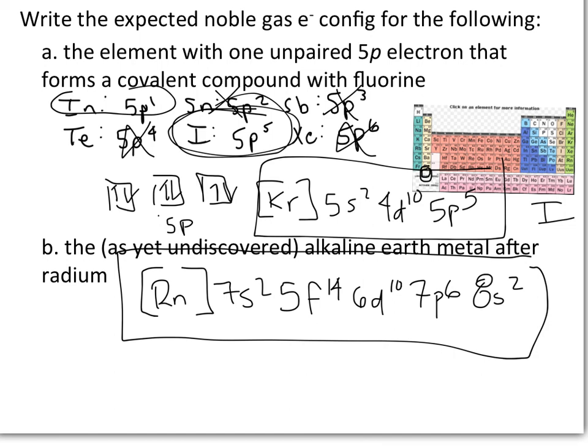To summarize, you are not just being asked to write electron configurations or noble gas electron configurations — you are being asked to solve problems using your knowledge of electron configurations, orbital notation diagrams, ionic versus covalent bonding, prediction of elements, and proper orbital filling rules. These are all concepts you will need to utilize for the rest of the semester.